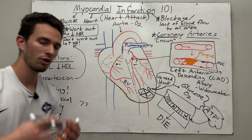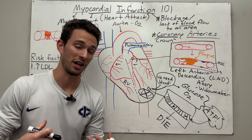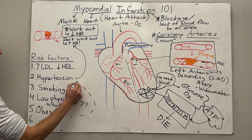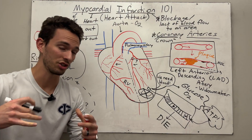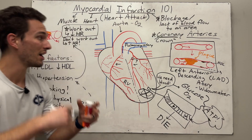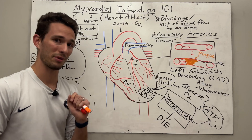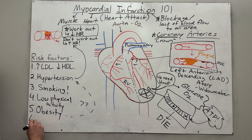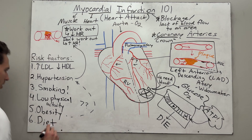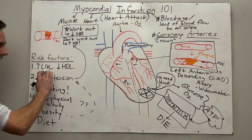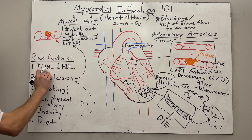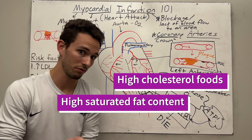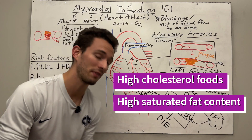The fifth risk factor is obesity. If you're obese, you actually have more blood in general — a higher blood volume — which could potentially increase blood pressure as well, leading to hypertension, putting a lot of force on those arteries and potentially damaging them. And that ties into the sixth risk factor: diet. How do you get high LDL in the first place? LDL is a cholesterol base, and it often spikes after you eat high cholesterol foods as well as high saturated fats.